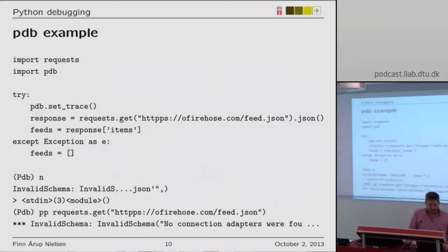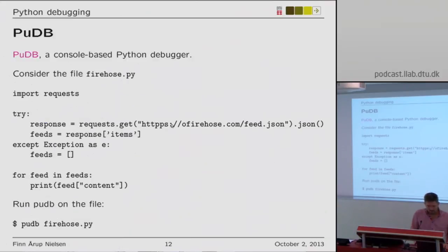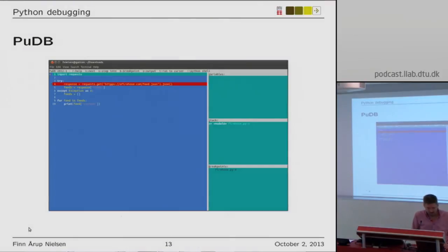There's another one that's terminal-based called pudb — a console-based Python debugger. If you have a file without the debugging statements, you run this application with the file name and pudb and you get this console-based interface where you can set breakpoints, watch the stack, and log variables.